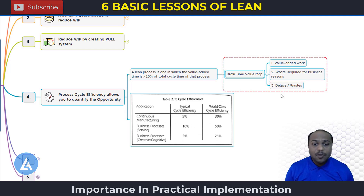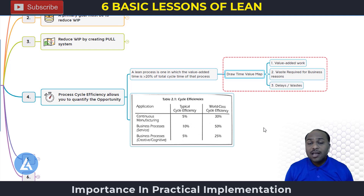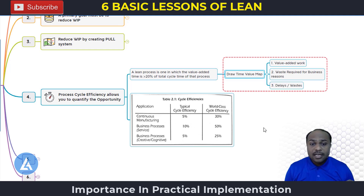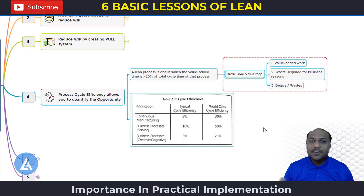What is world class cycle efficiency? For continuous manufacturing, world class efficiency is 30%, but typically it lands around 5%. For service or business processes, world class cycle efficiency is 50%, with typical cases at 10%. For creative or cognitive business processes, world class cycle efficiency is 25%, with typical cycle efficiency at 5%. There is a huge gap between current and world class cycle efficiency. This gap analysis helps identify non-value added activities so we can remove them and improve process cycle efficiency.